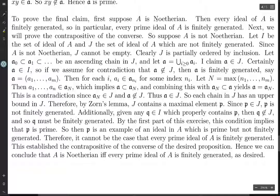Therefore it cannot possibly be the case that every prime ideal of A is finitely generated. This establishes the contrapositive: if A is not Noetherian then not every prime ideal is finitely generated, which is equivalent to: if every prime ideal of A is finitely generated then A is Noetherian. We conclude that A is Noetherian if and only if every prime ideal of A is finitely generated — and that's what we wanted.